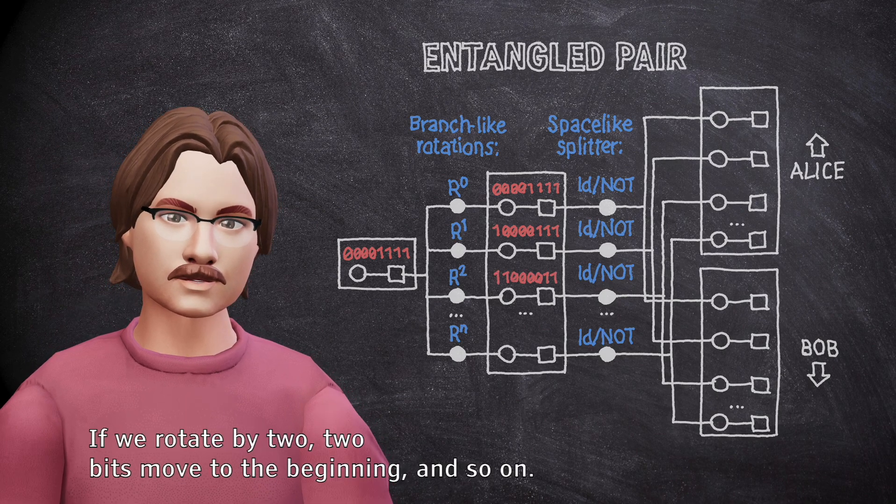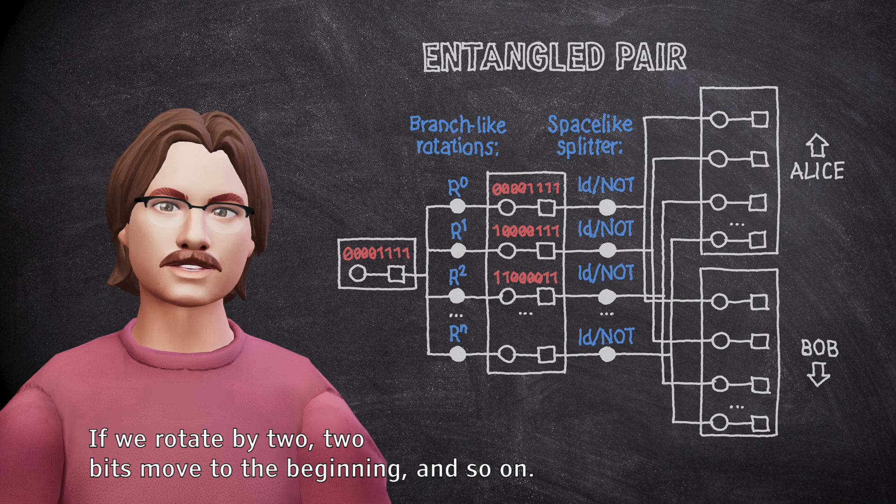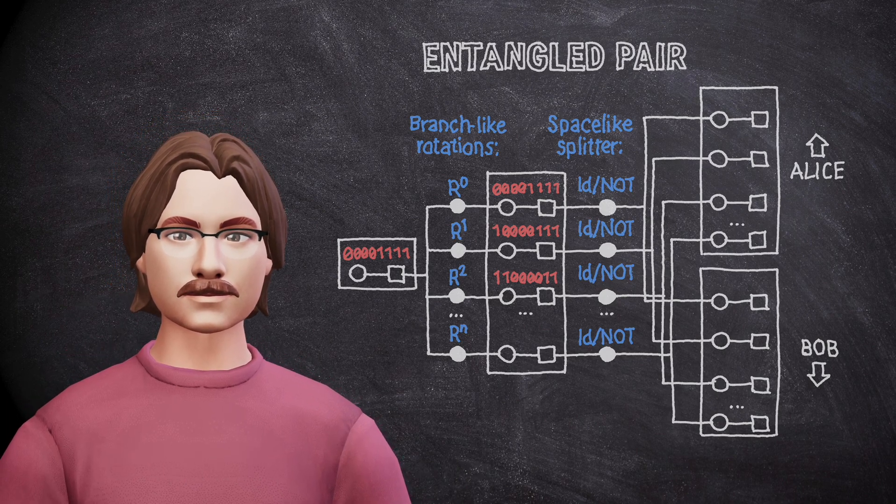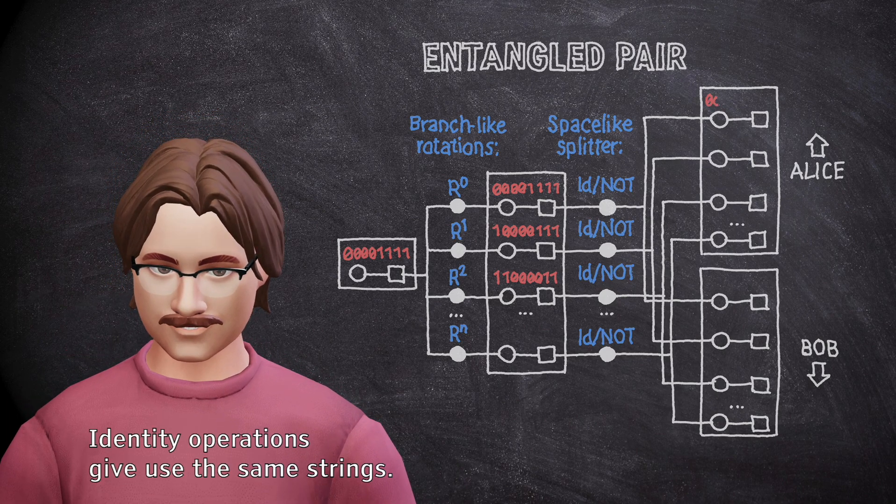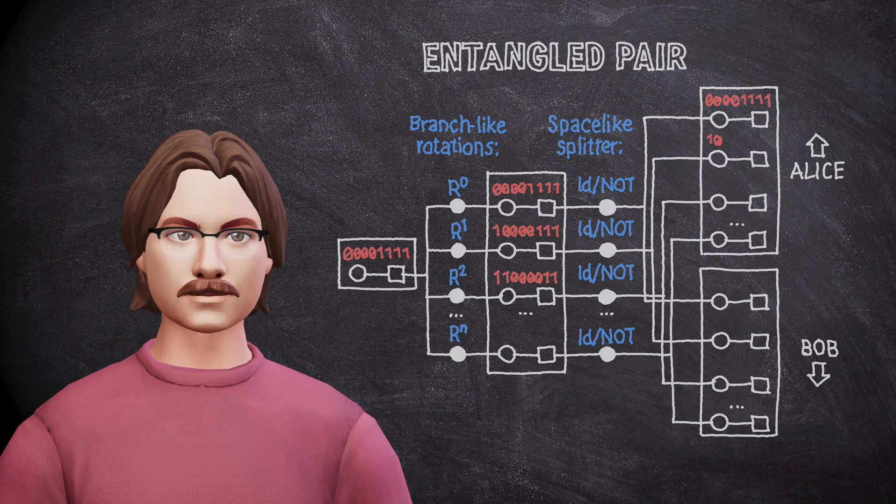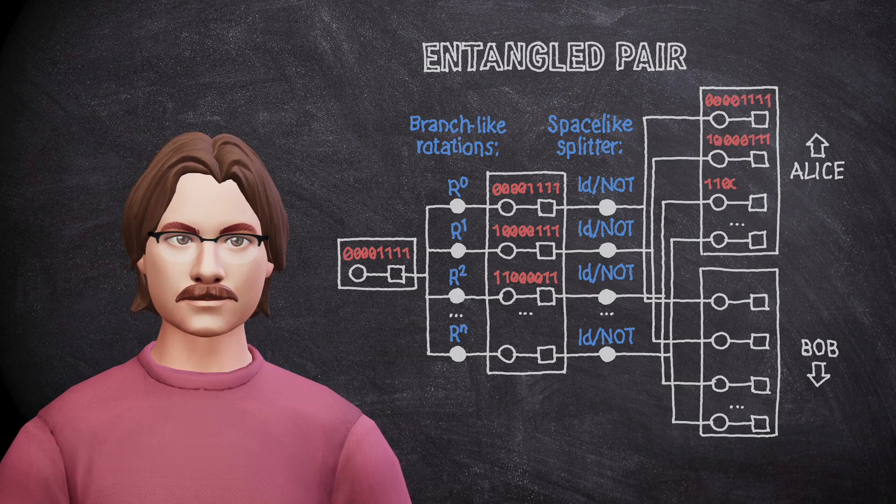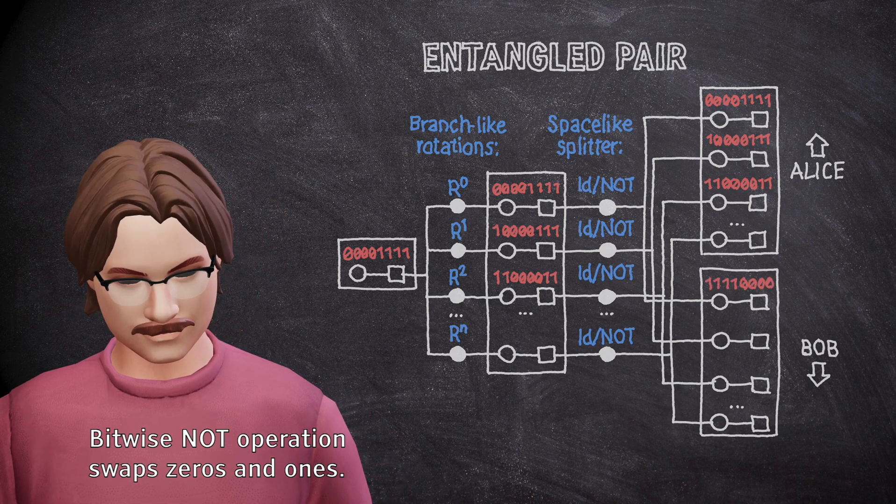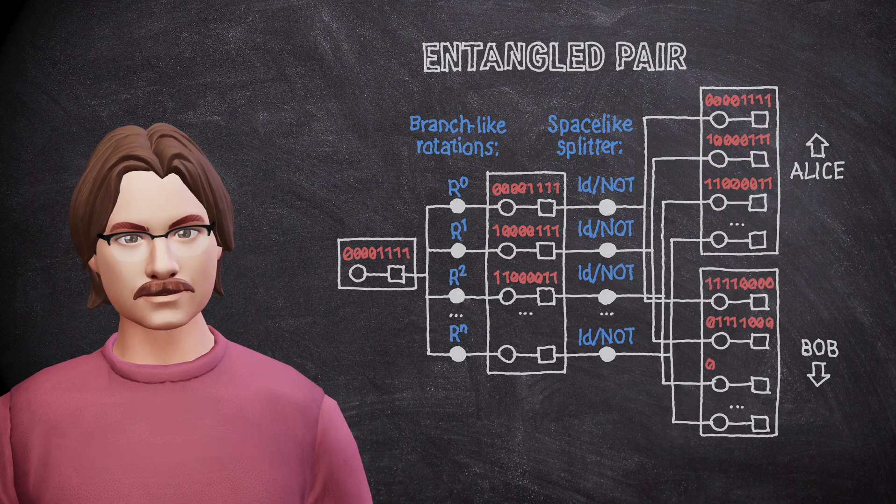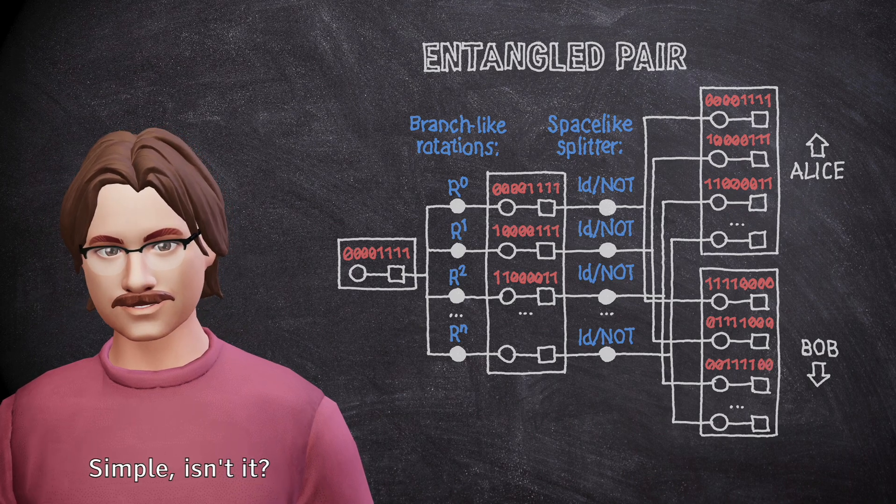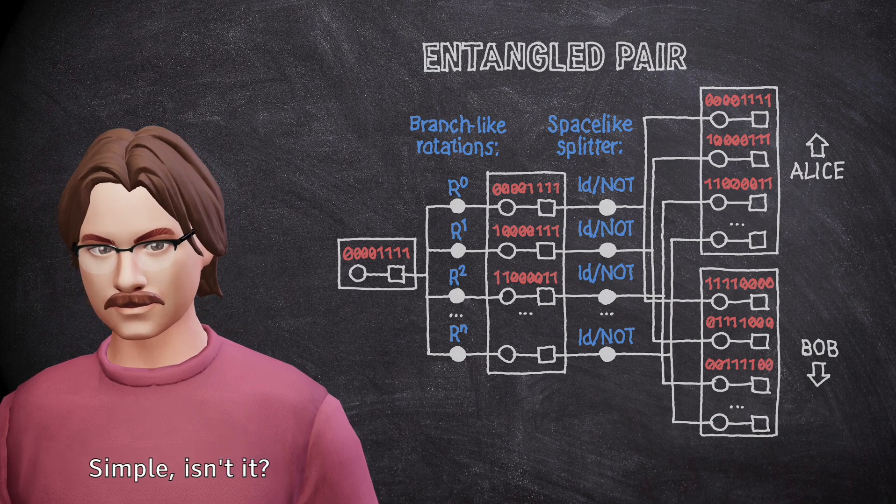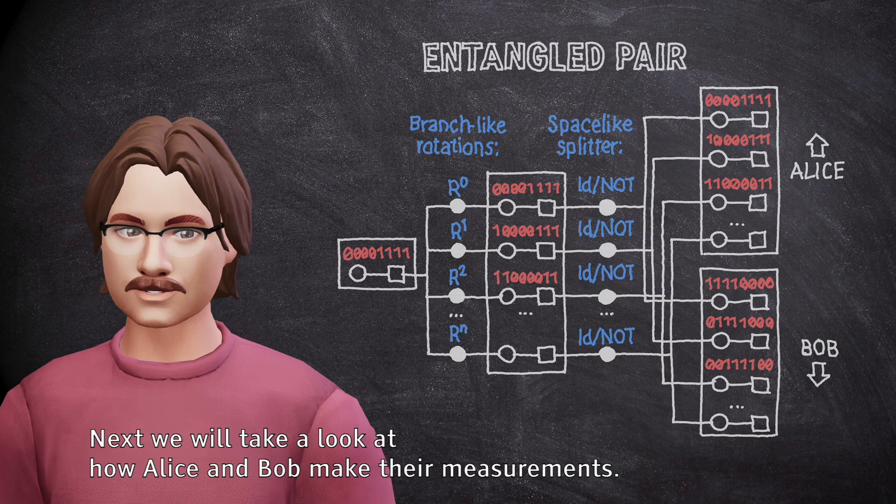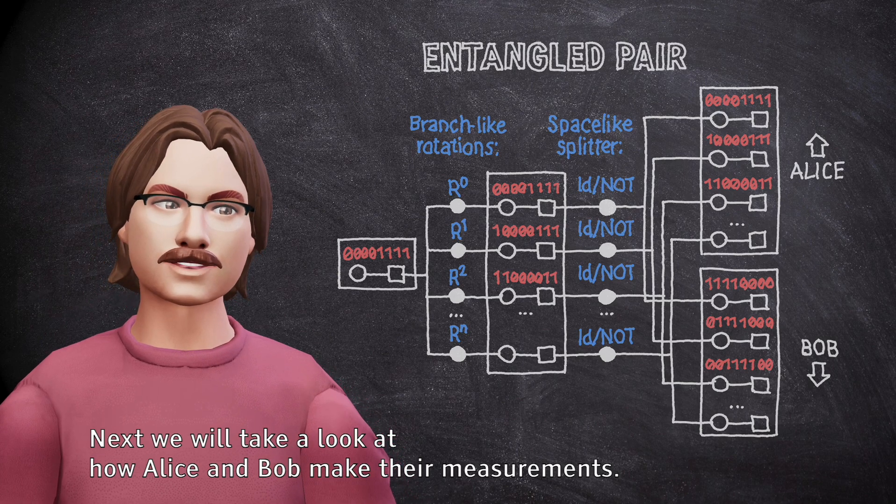If we rotate by two, two bits move to the beginning, and so on. Identity operations could use the same strings. Bitwise not operation swaps zeros and ones. Simple, isn't it?